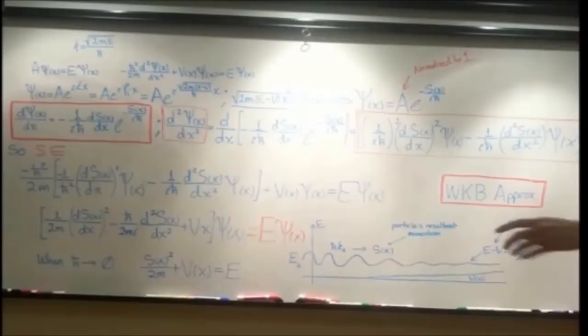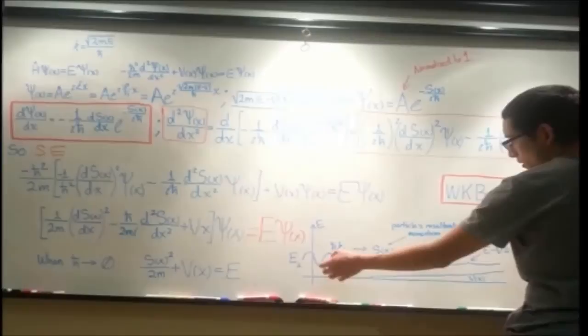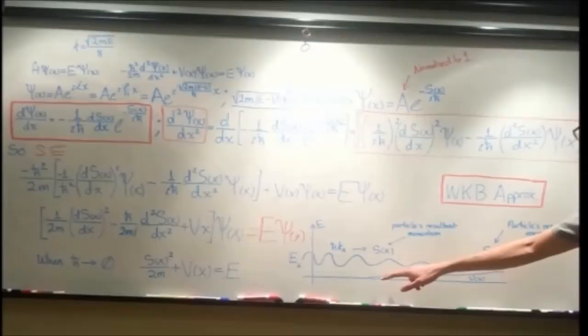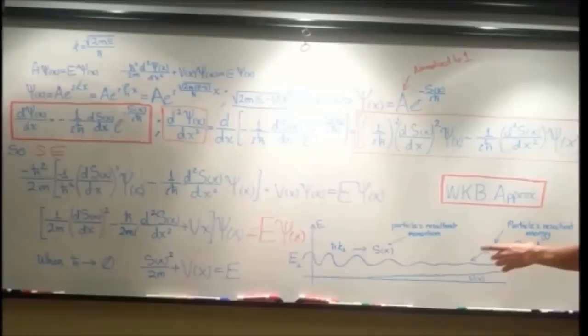For the WKB approximation, if we have a particle that we send through from an open area, we have the potential of zero. When we have a potential that changes very slightly and slowly, we won't know exactly how much the potential is. So we won't know what the change will be. So what we have to do is approximate.